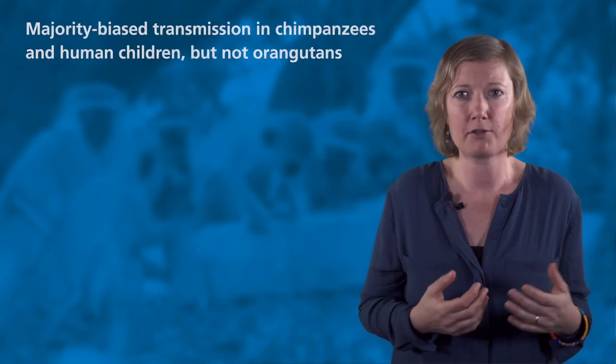Think again about the example of conformity presented with the chimpanzees that could poke or lift to access a reward. How can we make sure that individuals really conform to what the majority of others were doing, and not just to a specific role model exhibiting multiple times the same behavior?